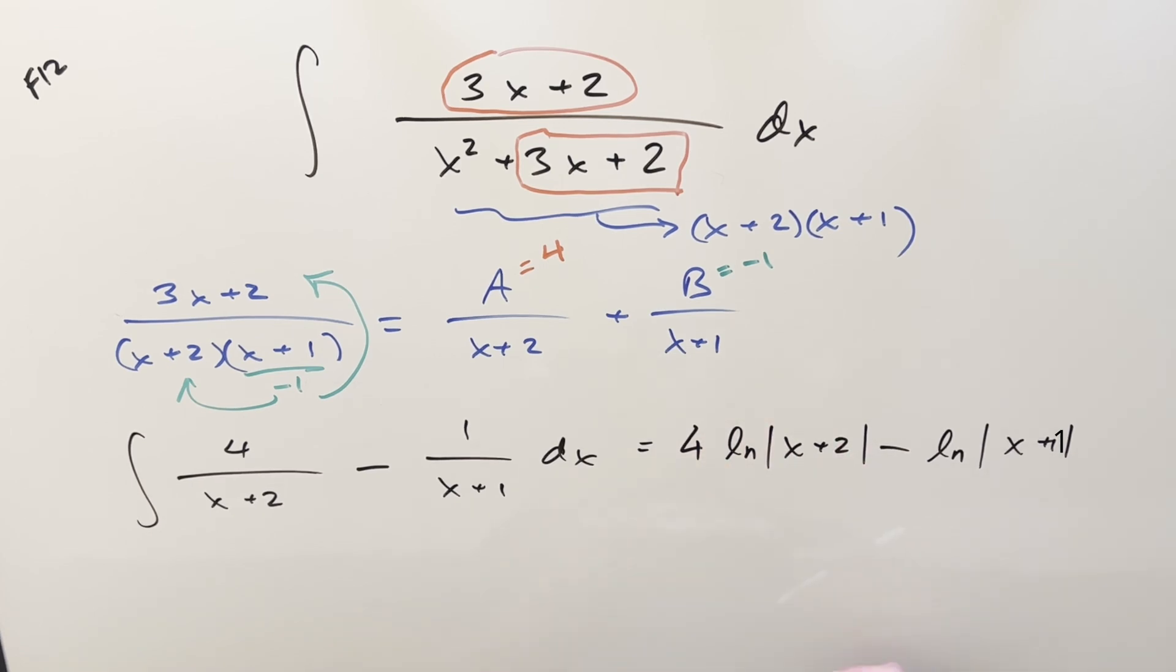So for my final solution, we get 4 natural log x plus 2 minus ln x plus 1, add a plus C, and that's it.